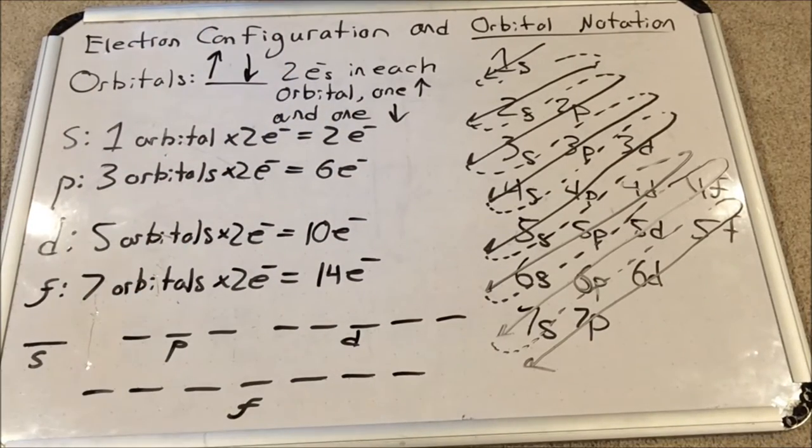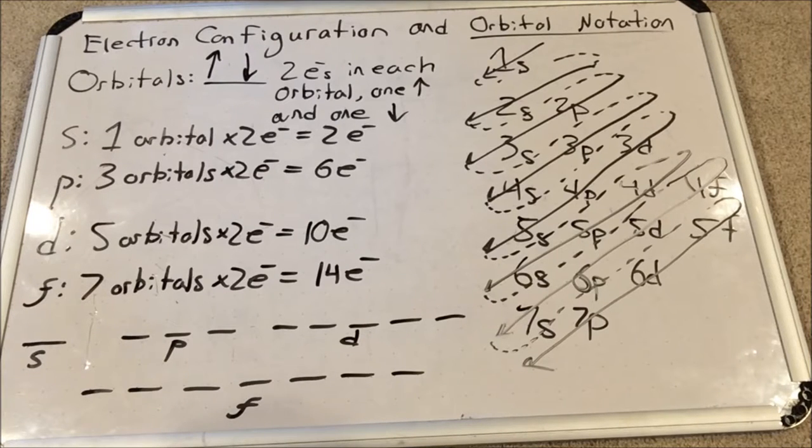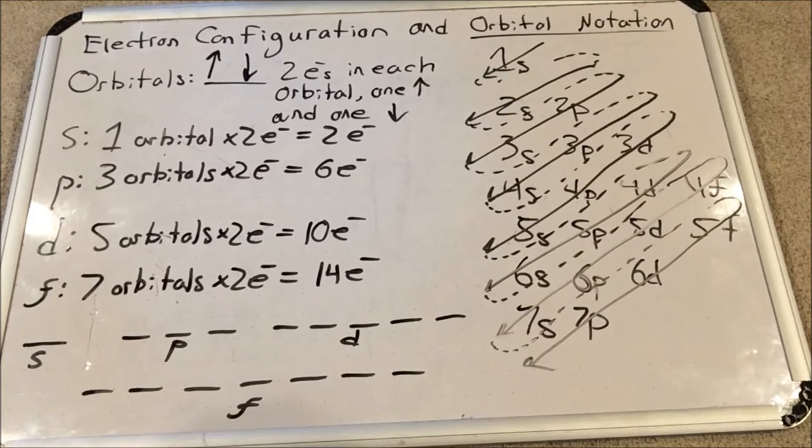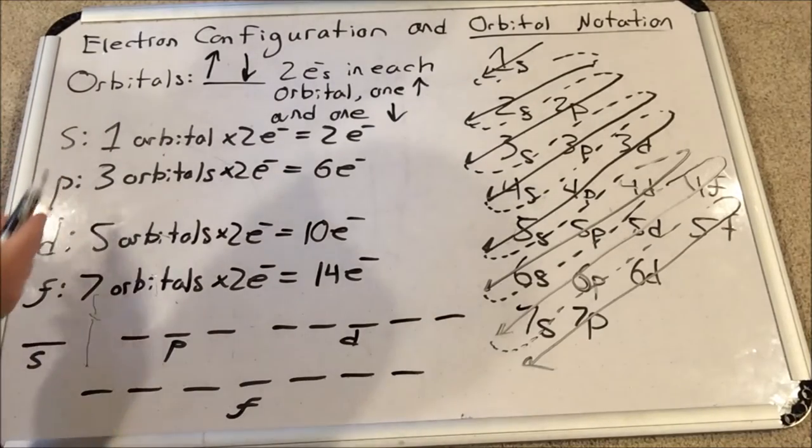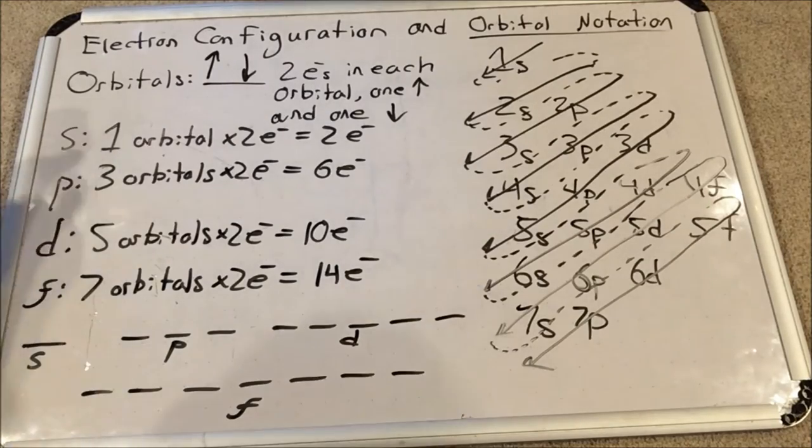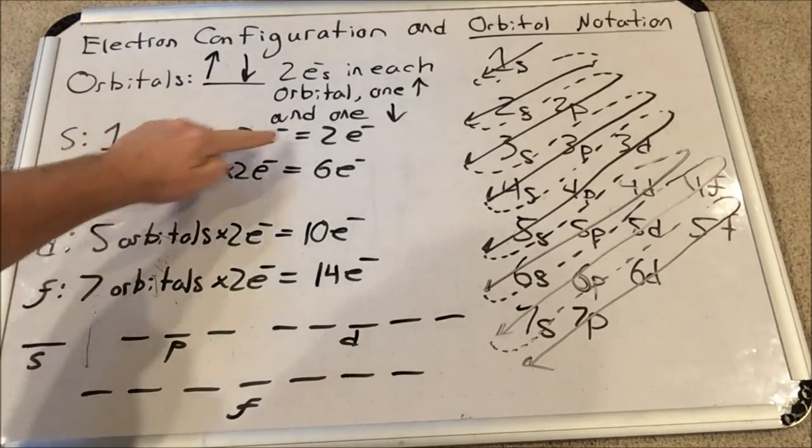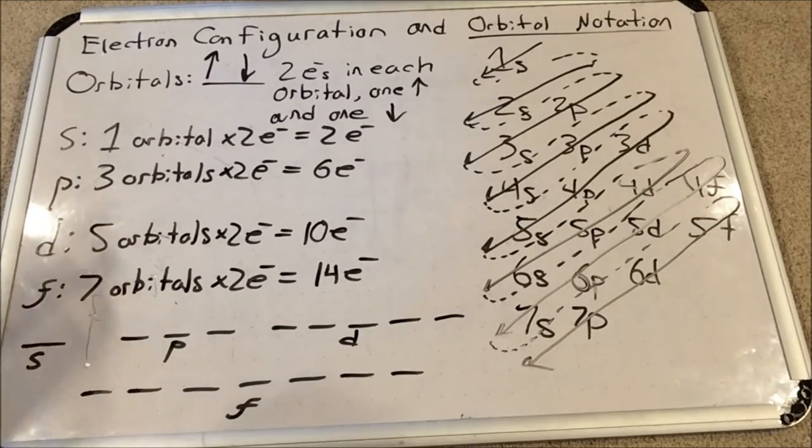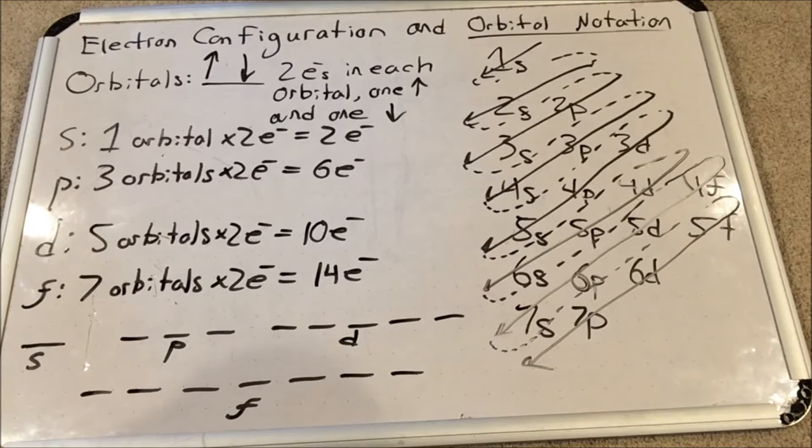Now each sublevel has a different number of orbitals. There are four different types of sublevels: s, p, d, and f. The s sublevel has one orbital, two electrons in that orbital makes for two total electrons in each s sublevel. The p sublevel has three orbitals, so if we multiply that by the number of electrons in each, we get six electrons in the p sublevel.